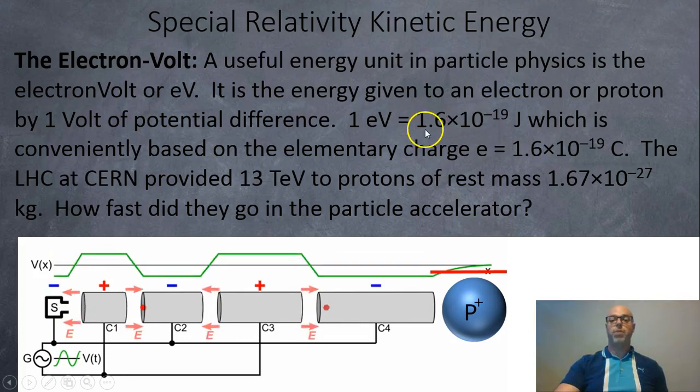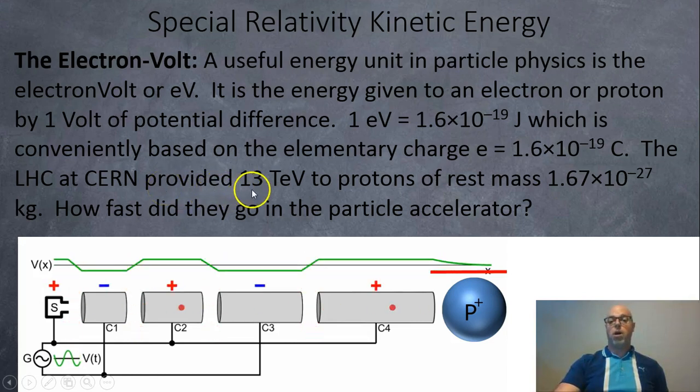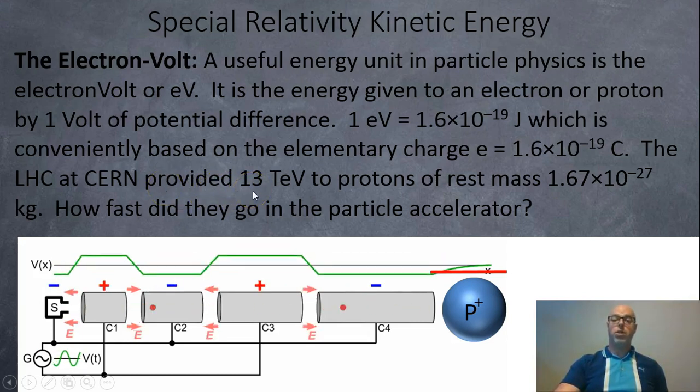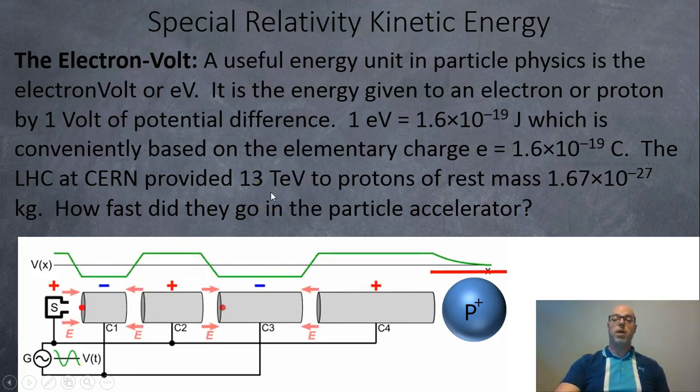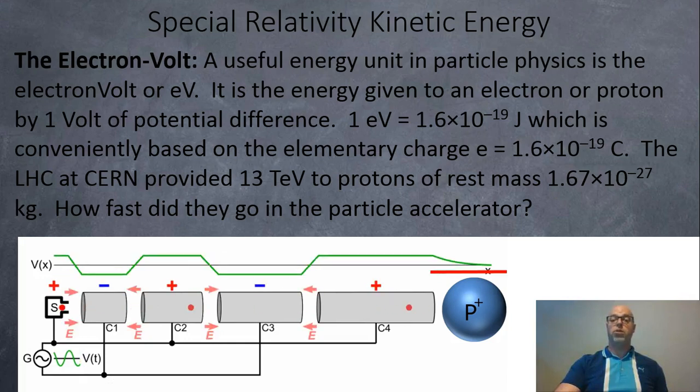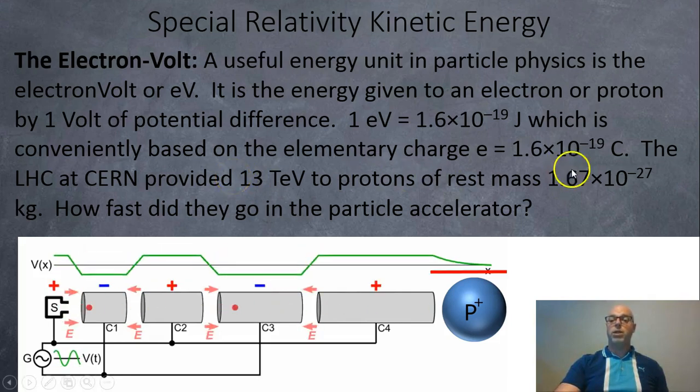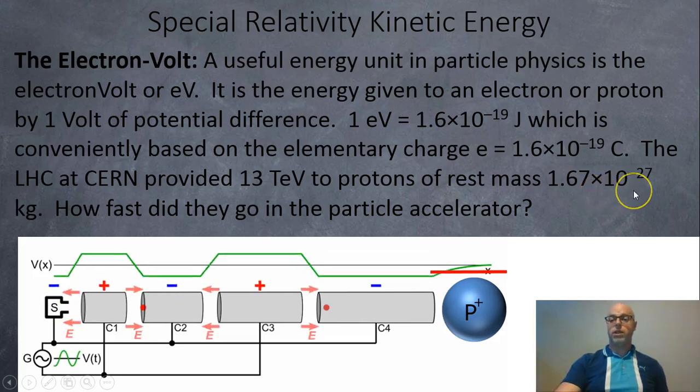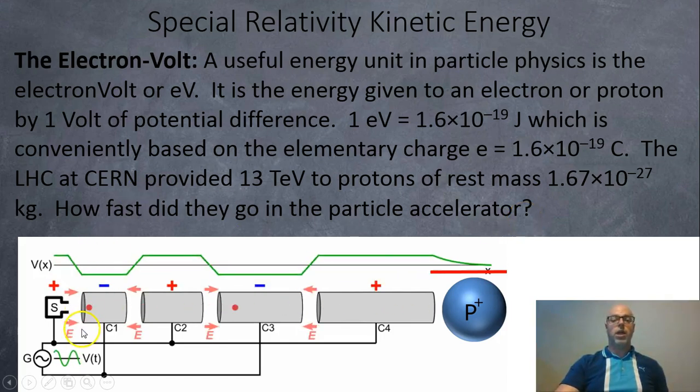The Large Hadron Collider at CERN, which was used to find the Higgs boson or the god particle as they like to call it, uses 13 tera electron volts. Basically, after going around the circle many times, it accumulates up to 13 trillion volts worth of potential difference, and the protons get 13 tera electron volts worth of kinetic energy. Here's the rest mass of a proton: 1.67 × 10⁻²⁷ kilograms. How fast did they go in the particle accelerator?